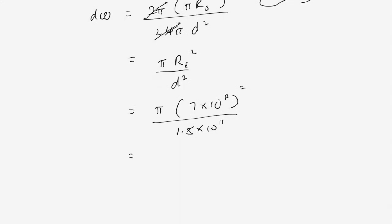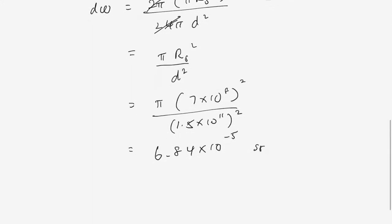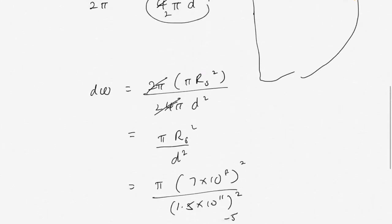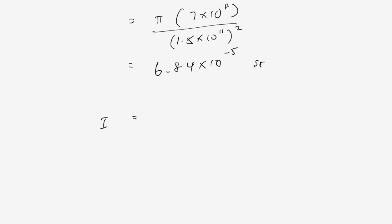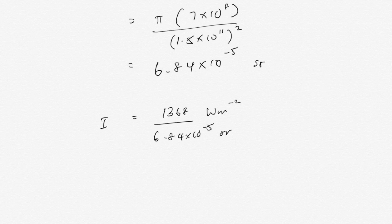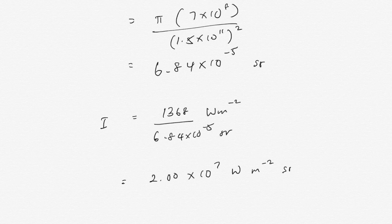Calculate this and you get 6.84×10⁻⁵, with units of steradians. Now we substitute this value back into the equation above, giving 1368 W/m² divided by 6.84×10⁻⁵ steradians, which gives approximately 2×10⁷ watts per meter squared per steradian, or per solid angle. That is the intensity of the Sun for every solid angle.